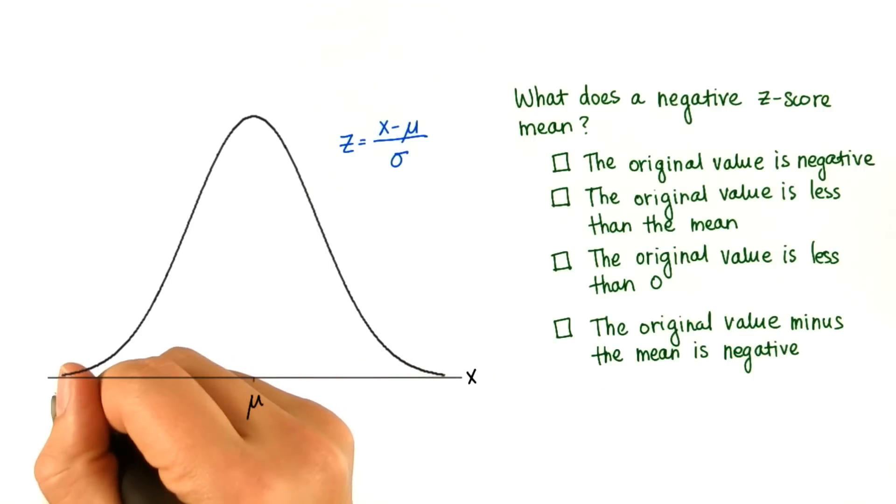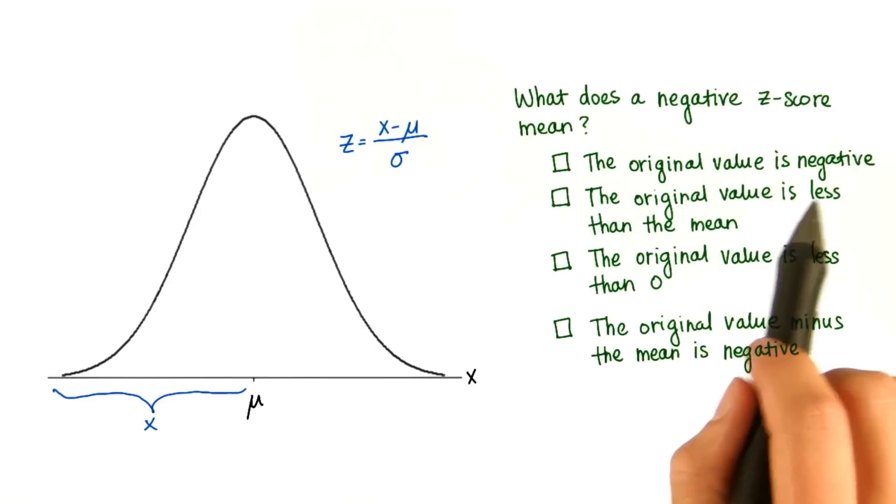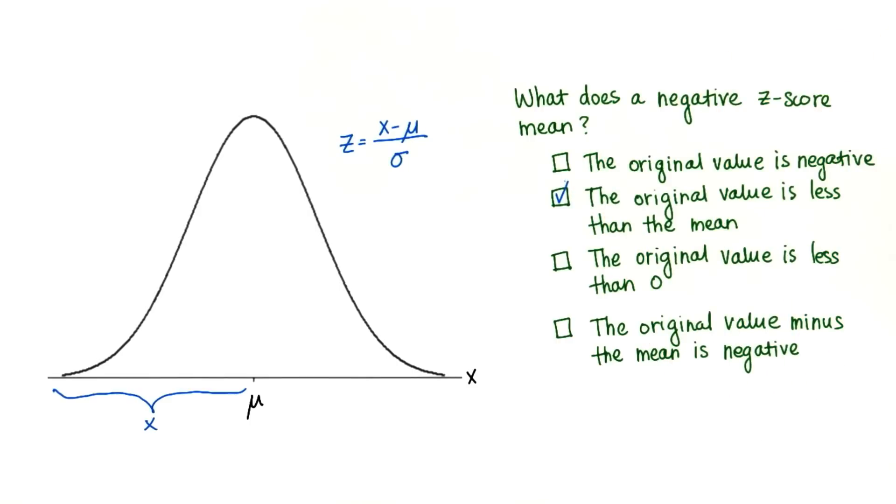That must mean that x is somewhere down here. So that doesn't necessarily mean that the original value is negative, though it could be. It does mean that the original value is less than the mean.